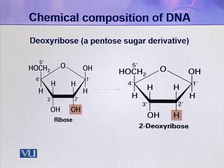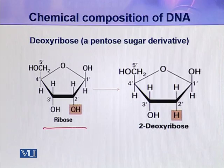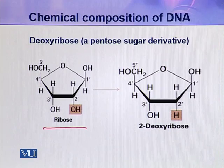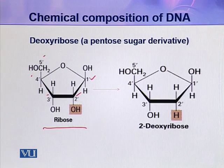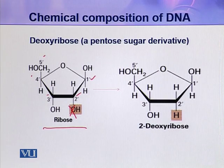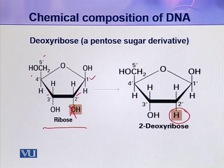Deoxyribose sugar is a pentose sugar derivative — it is derived from ribose sugar. This sugar is numbered conventionally with a prime designation added: 1 prime, 2 prime, 3 prime, 4 prime, and 5 prime carbons. If at the 2 prime position one oxygen is removed, ribose sugar becomes deoxyribose. So at the 2 prime position, one oxygen is missing — this is deoxyribose sugar, the first component of deoxyribonucleotide.